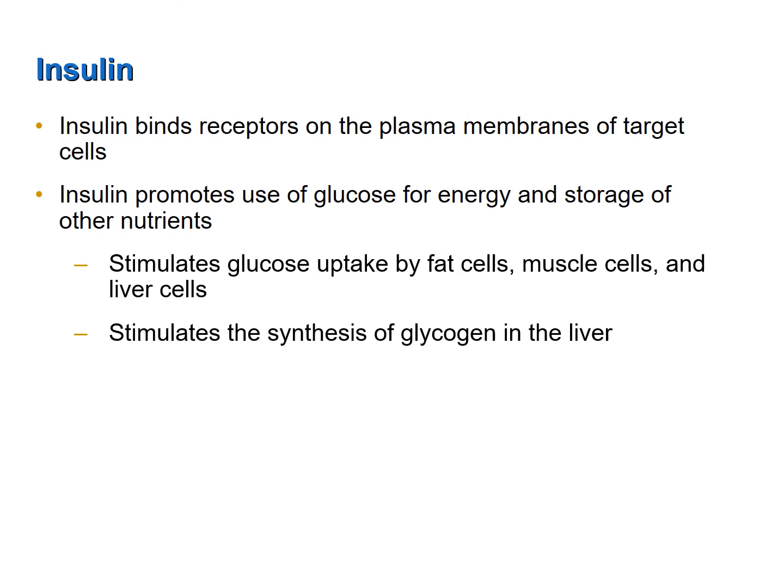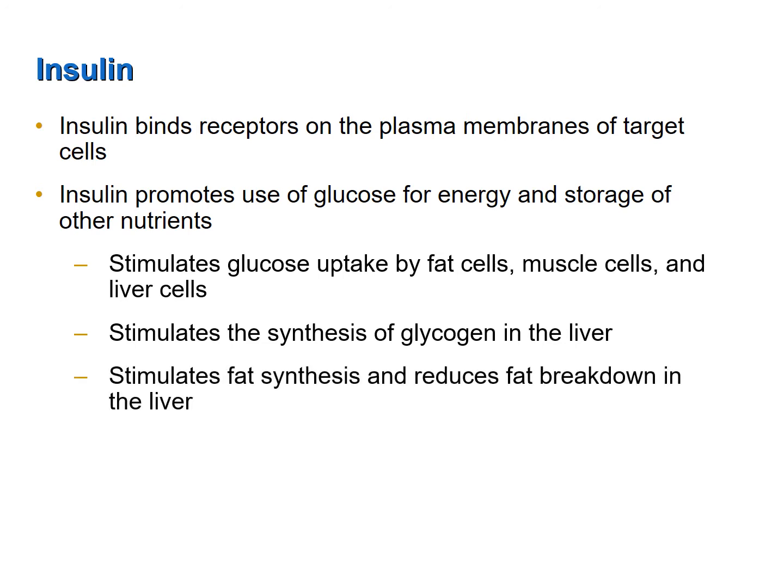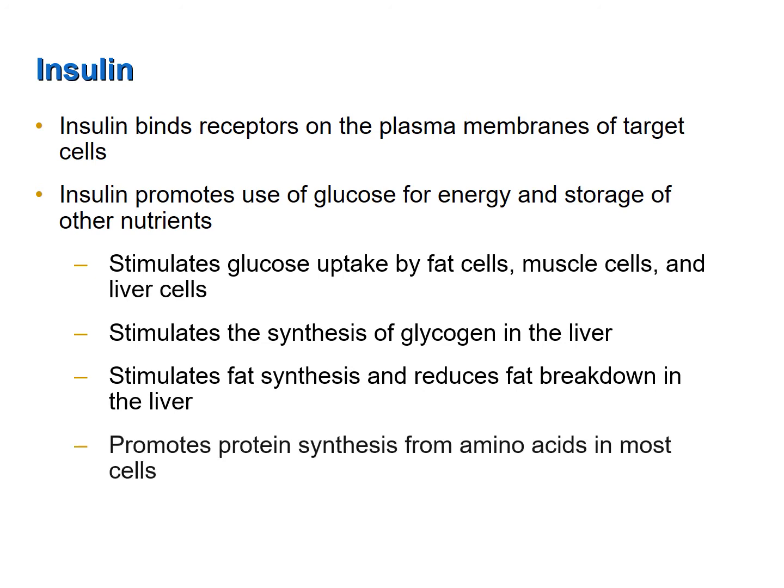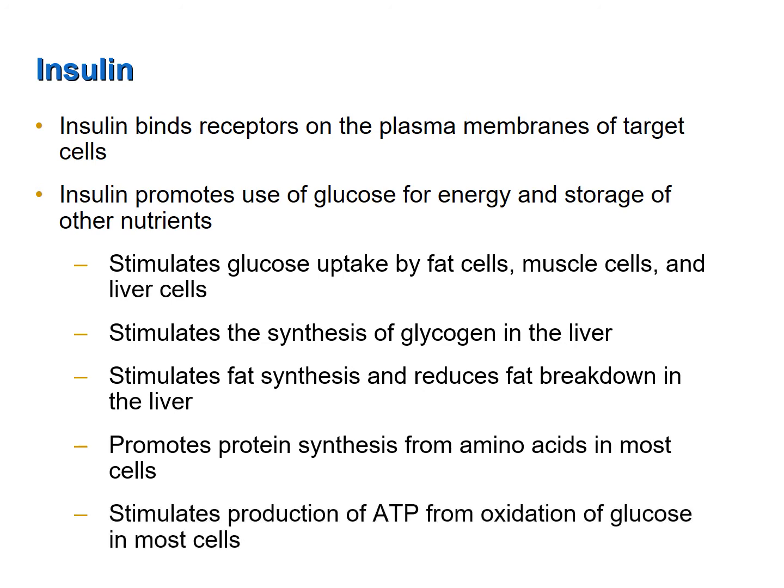In liver cells, once glucose enters, it is used to make the storage form of glucose, which is glycogen. Glycogen can be used later between meals to release glucose into the blood. Insulin also stimulates fat synthesis and reduces the breakdown of fat in the liver. Insulin also promotes the production of protein from amino acids in most cells of the body, and stimulates the oxidation of glucose to make ATP.